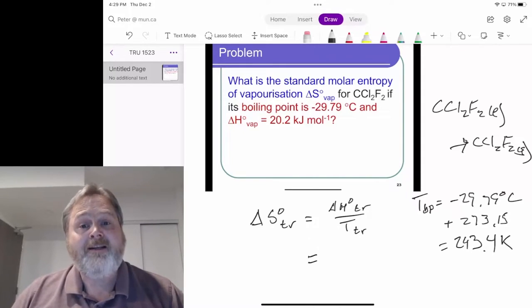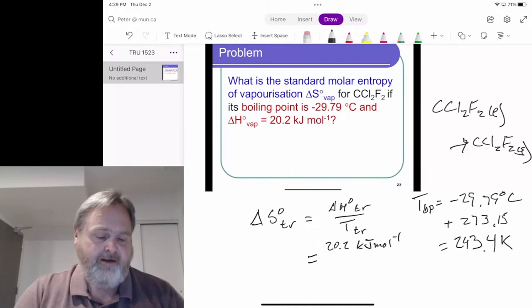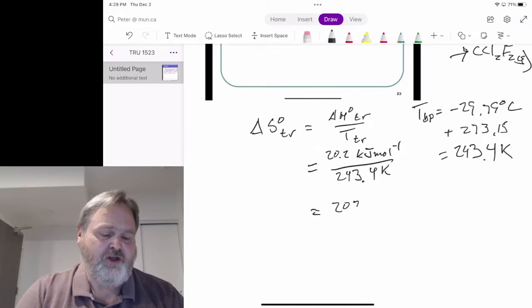Substituting what we know into this equation, we get 20.2 kilojoules per mole divided by that temperature of 243.4 Kelvin. Let's make one change here. That's 20,200 joules per mole.